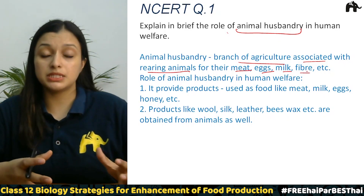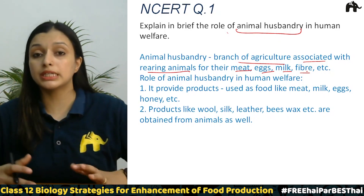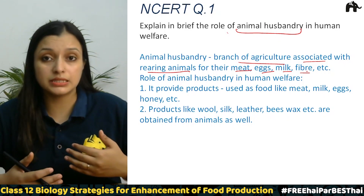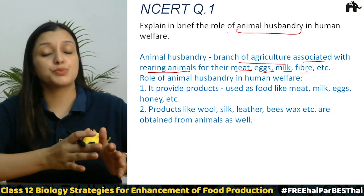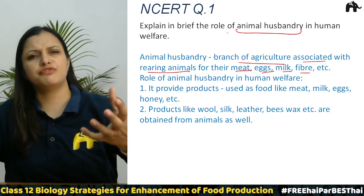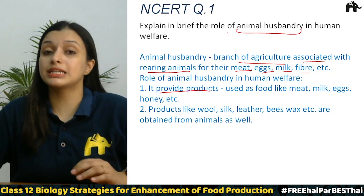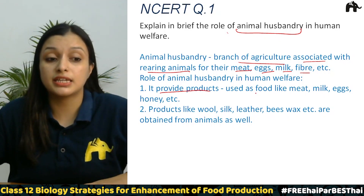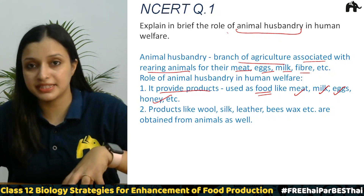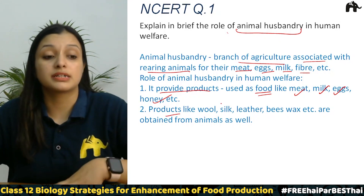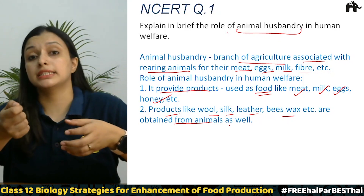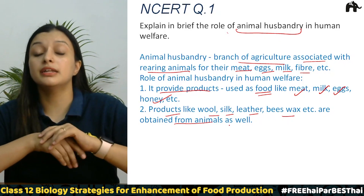We take care of animals — they are given proper shelter, proper food, clean living environment, proper medicines, and proper vaccinations so that we can use them for milk, meat, eggs, and fibers. So what is the role of animal husbandry in human welfare? It provides us many products used as food like meat, milk, eggs, and honey — we get all these things from animals.